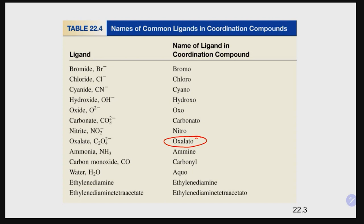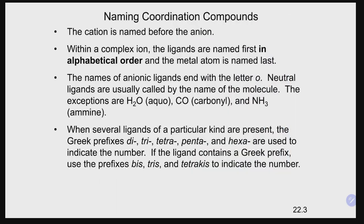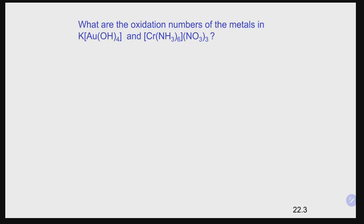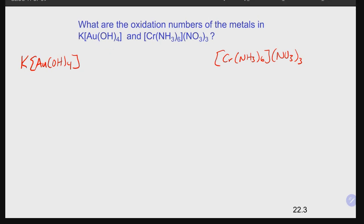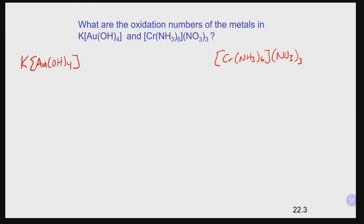Additional ligand names: carbonate is carbonato, oxalate is oxalato. Ethylenediamine is abbreviated en in both formula and name. EDTA is another important multidentate ligand. Now let's work through the examples — first assign oxidation numbers and coordination numbers for each complex ion, then we'll name them.